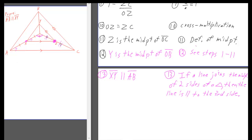And then you do something very fancy. You say Y is the midpoint of OB, and you can just say see steps 1 to 11 because that's the proof, because it's exactly the same stuff, exactly the same givens, and you're trying to prove exactly the same thing. So that gives you that Y is the midpoint of OB. And then you can say that the two lines are parallel because if a line joins the midpoint of two sides of a triangle, then the line is parallel to the third side.